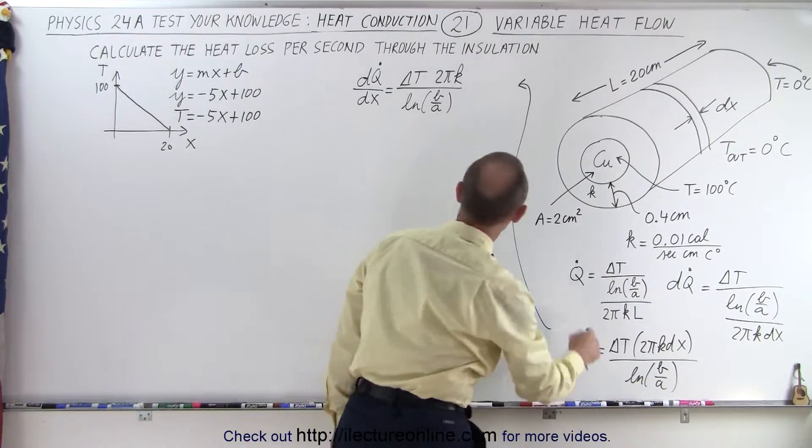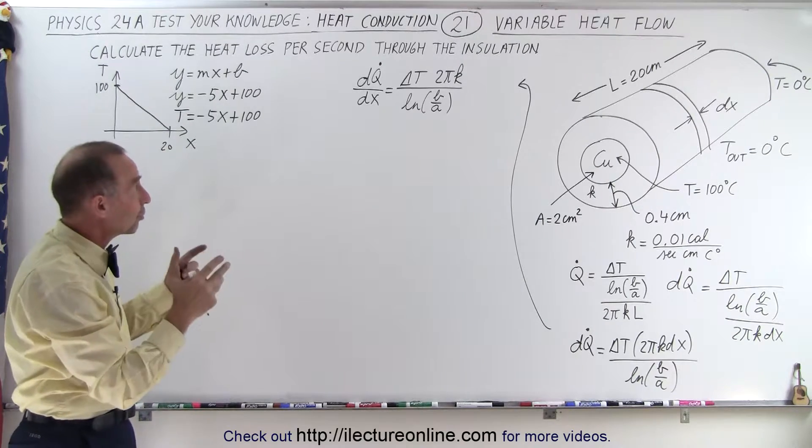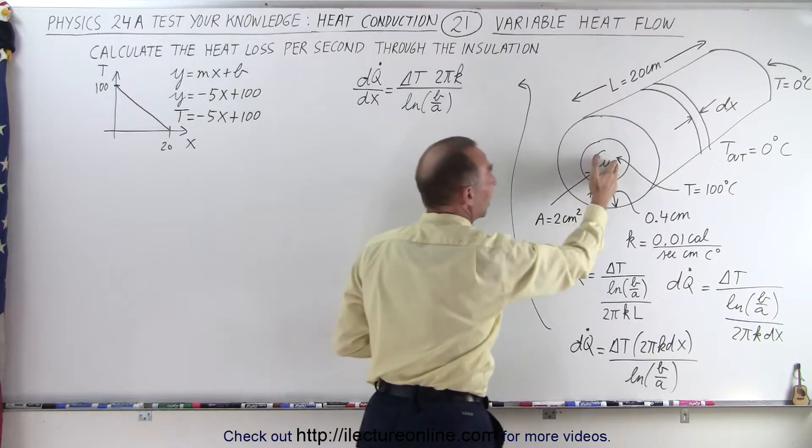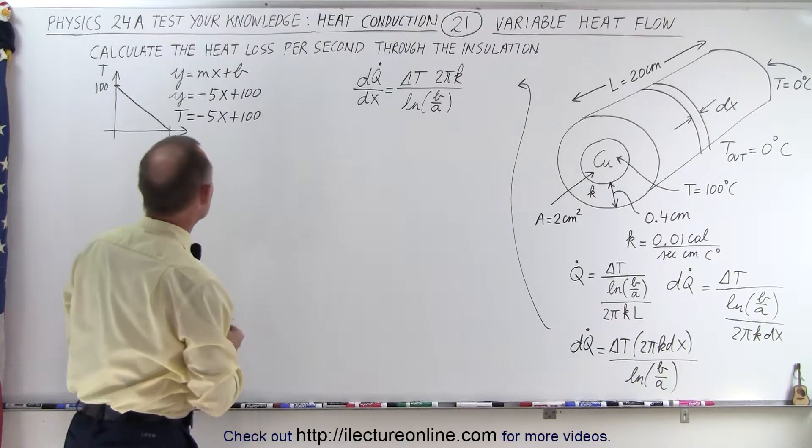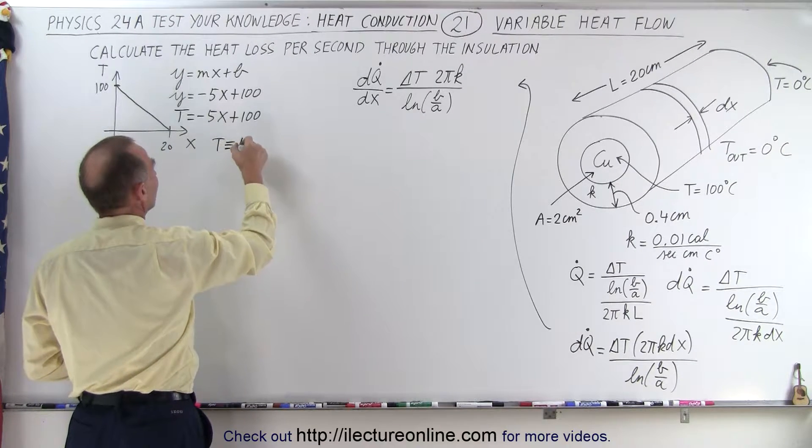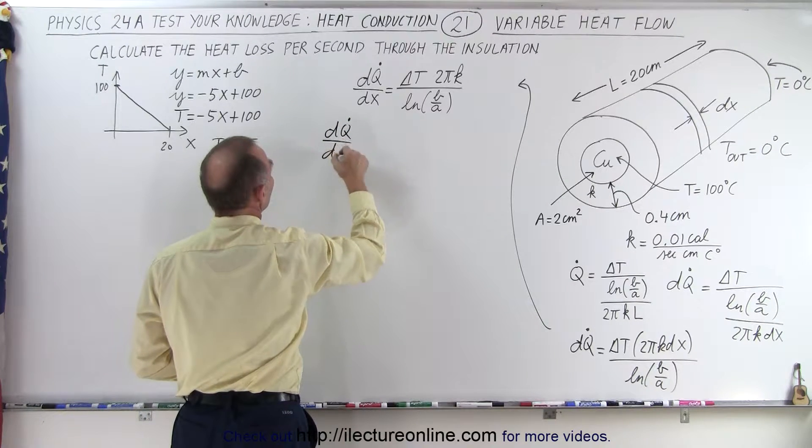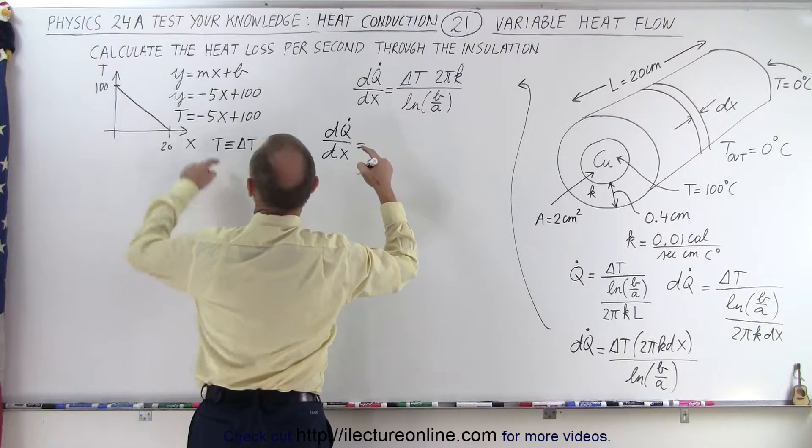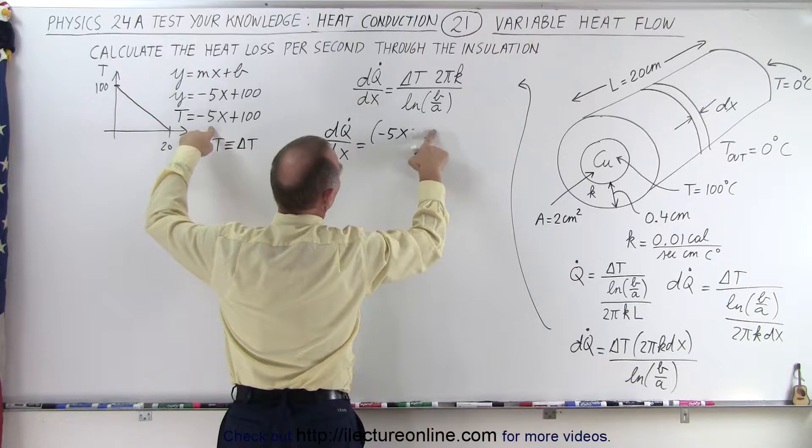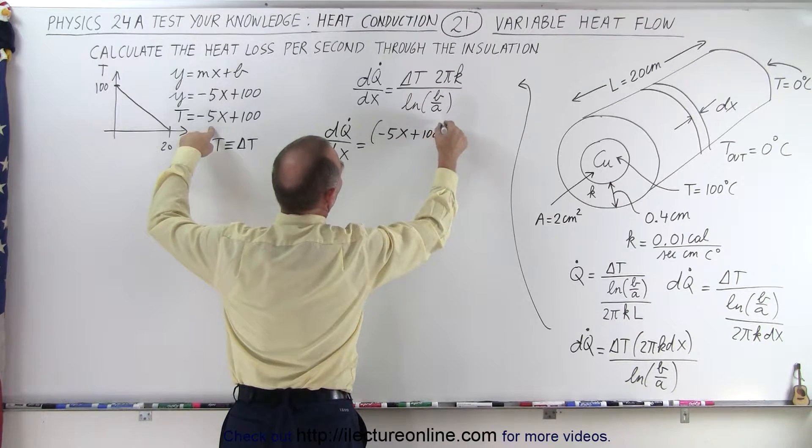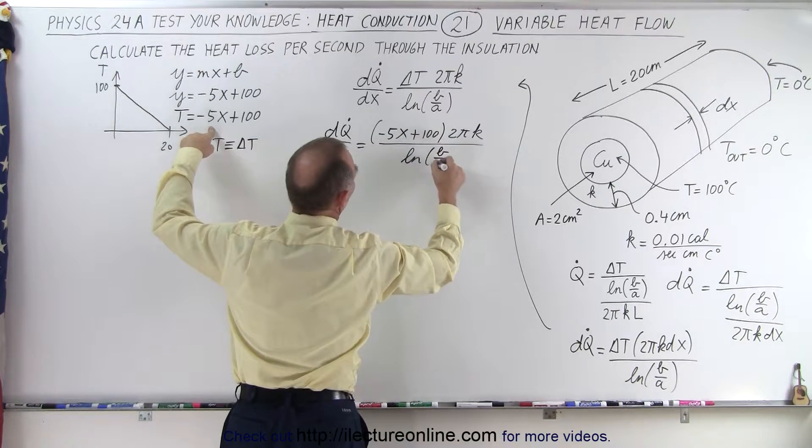And notice that the ΔT that we have in here really is the temperature because the ΔT is the temperature that the copper is at minus the outside temperature, which is 0. So ΔT in essence is really T. So in this case, T is the same by definition as the ΔT. So this equation can then be written as dQ̇/dx is equal to ΔT, which can be written as minus 5X plus 100 times 2πK divided by the natural log of B over A.